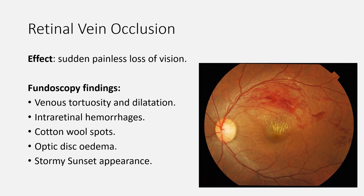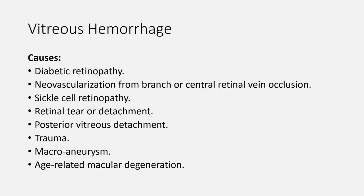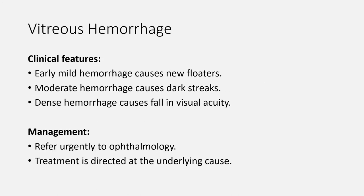Now let's move to vitreous hemorrhage, which is the extravasation of blood into one of the several potential spaces within and around the vitreous body. Causes include diabetic retinopathy, neovascularization from branch or central retinal vein occlusion, sickle cell retinopathy, retinal tear or detachment, posterior vitreous detachment, trauma, macro-aneurysm, and age-related macular degeneration. The clinical features depend on severity: early mild hemorrhage causes new floaters, moderate hemorrhage causes dark streaks, and dense hemorrhage causes fall in visual acuity. Refer the patient urgently to ophthalmology; treatment is directed at the underlying cause.